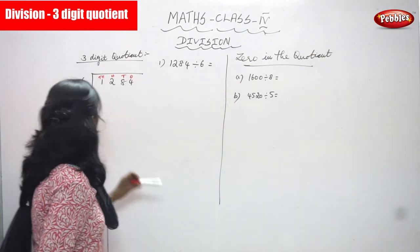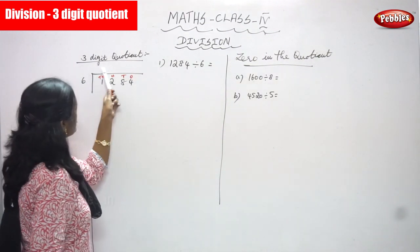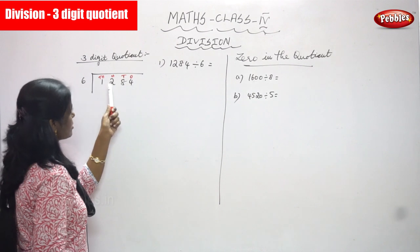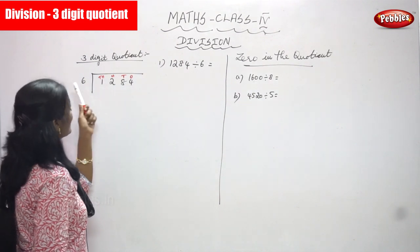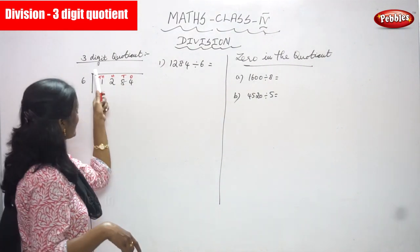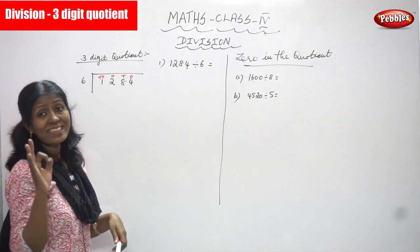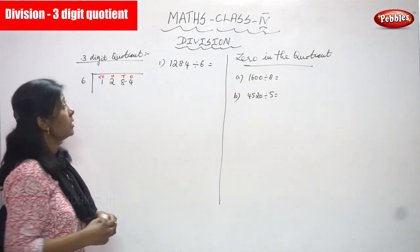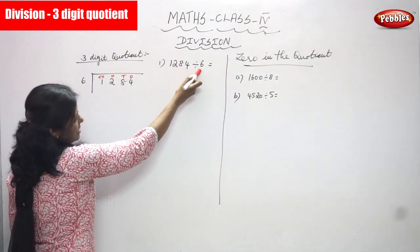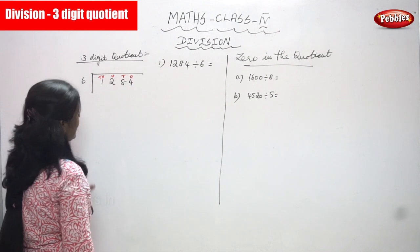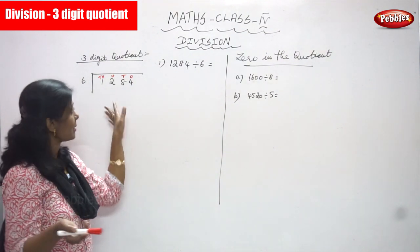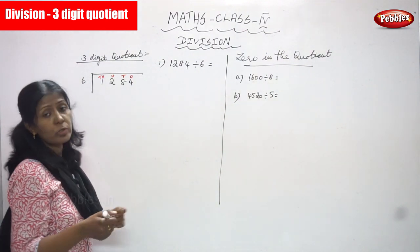Now we are going to see three-digit quotient. The dividend is a four-digit number and the divisor is a single digit. You can get a three-digit quotient. Look at the sum: 1284 is divided by 6 — you can get a three-digit quotient. Now we are going to solve the problem.